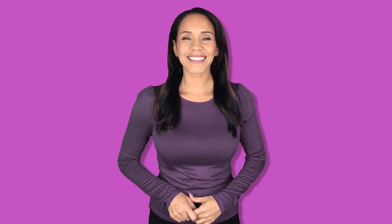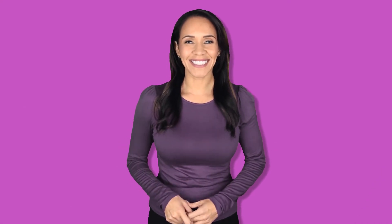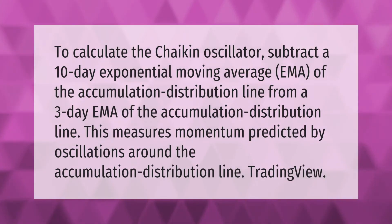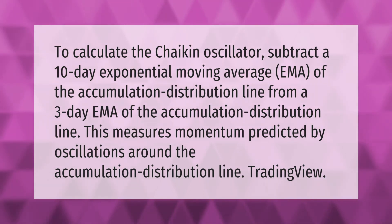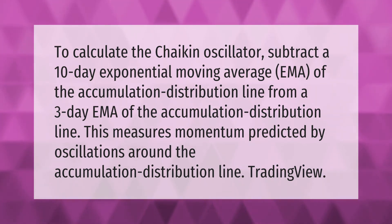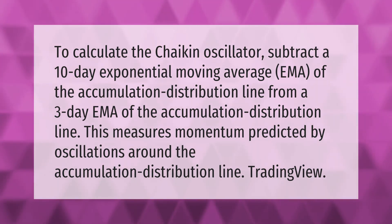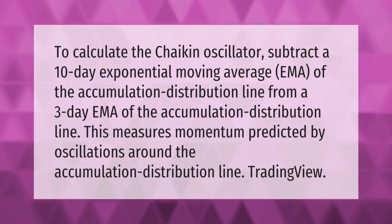To calculate the Chaikin oscillator, subtract a 10-day exponential moving average (EMA) of the accumulation distribution line from a 3-day EMA of the accumulation distribution line. This measures momentum predicted by oscillations around the accumulation distribution line, available on TradingView.